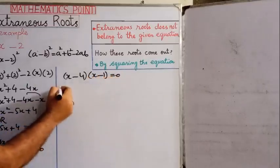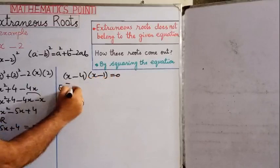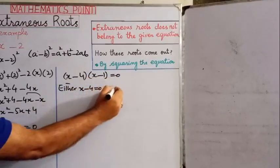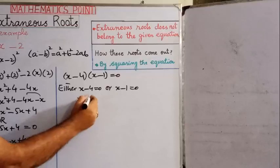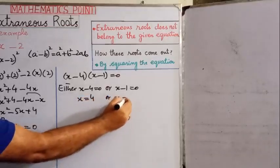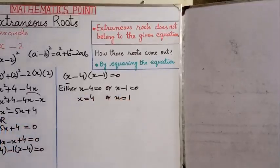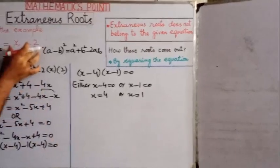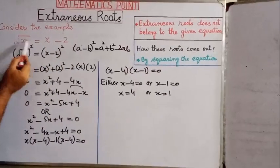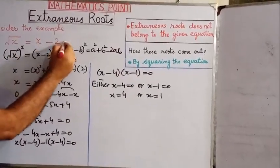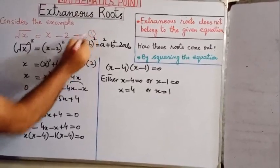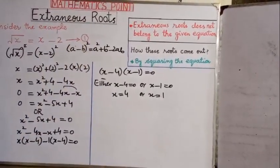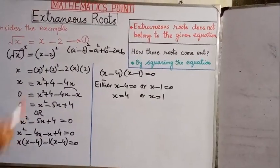We now have two factors: (x minus 4) and (x minus 1), both equal to zero. Either x minus 4 equals 0 or x minus 1 equals 0, giving x equals 4 or x equals 1. This is equation number 1, the given equation: square root of x equals x minus 2. We now put these two values, x equals 4 and x equals 1, into equation number 1.